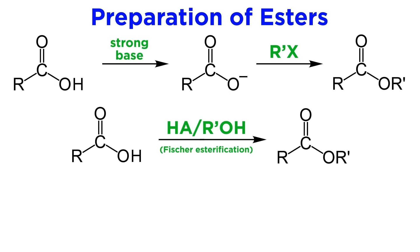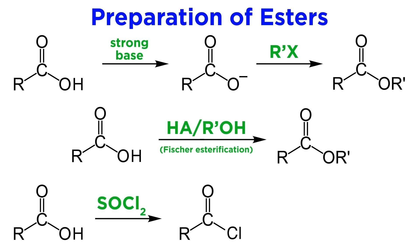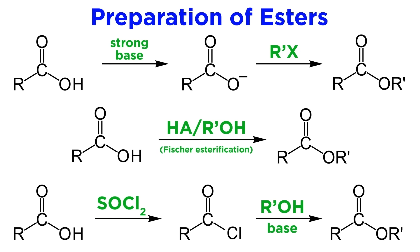Otherwise, Fischer esterification is probably the most common method, where the carboxylic acid reacts in the presence of acid with an alcohol, which attacks the carbonyl and displaces the hydroxyl. Alternately, the carboxylic acid can be converted into the acid chloride, which can react with an alcohol in the presence of base to give the ester.